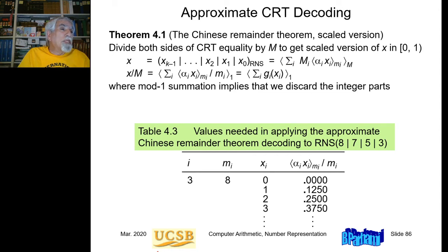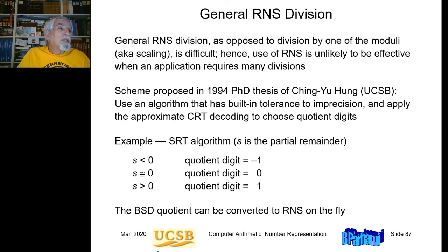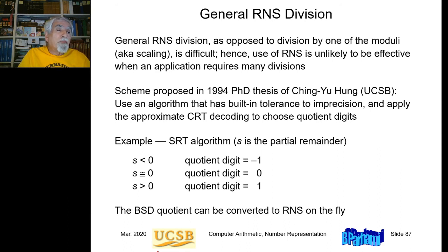So there are three problems with residue number systems: division is difficult, comparison of numbers is difficult, and sign detection is difficult. A PhD student of mine at UCSB in 1994 developed a division algorithm for RNS that is quite a bit simpler than division algorithms that existed prior to 1994. However, it is still a difficult operation — less difficult than before 1994. If you are curious, you can study his paper on RNS division.